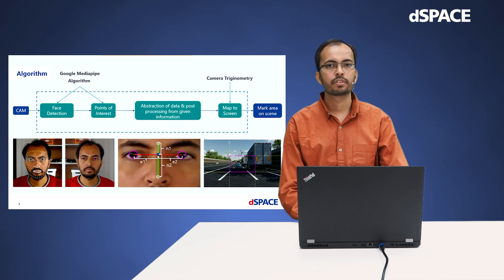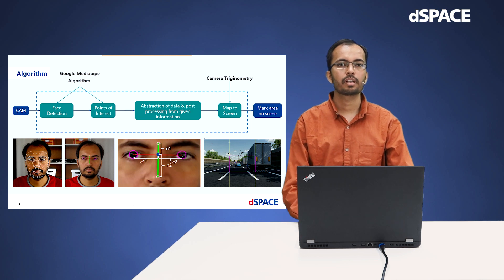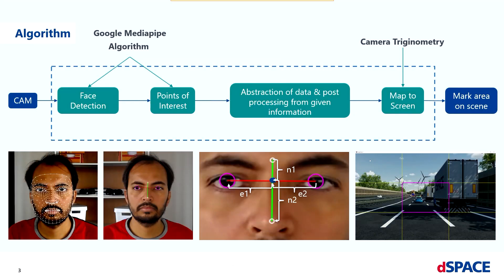This is an overview of the gaze estimation realized in Altimaps. An image of the face of a person is given as input through a webcam. A face is detected from 3D face landmarks using the Google MediaPipe algorithm. The points of interest and their information are extracted from the face landmarks, and this information is processed to estimate where the person is possibly looking. The region is mapped onto the screen using camera trigonometry and the region is highlighted.